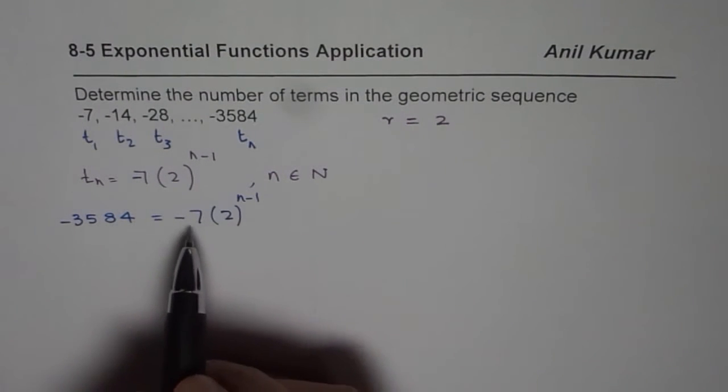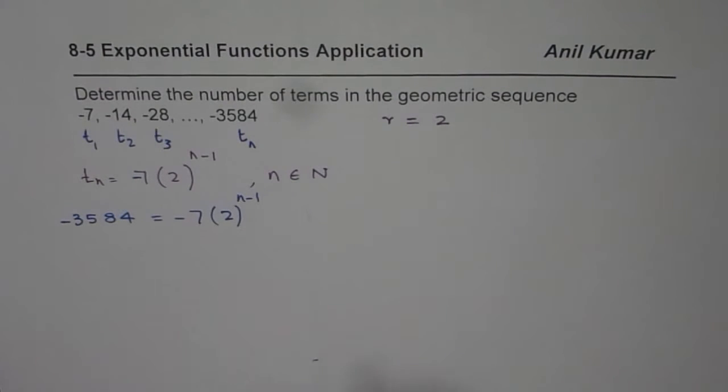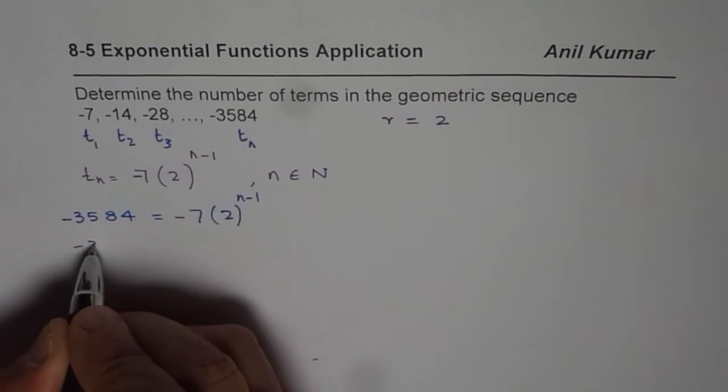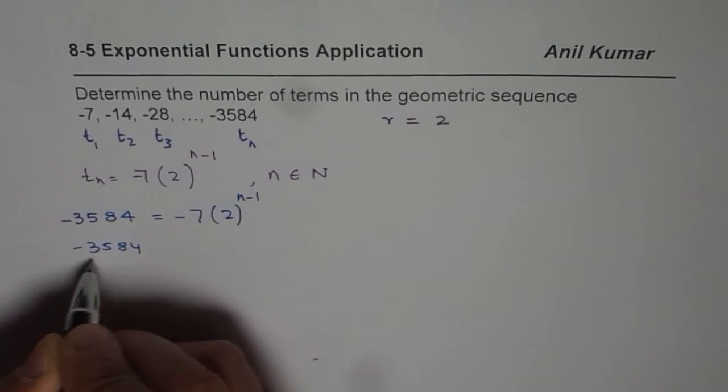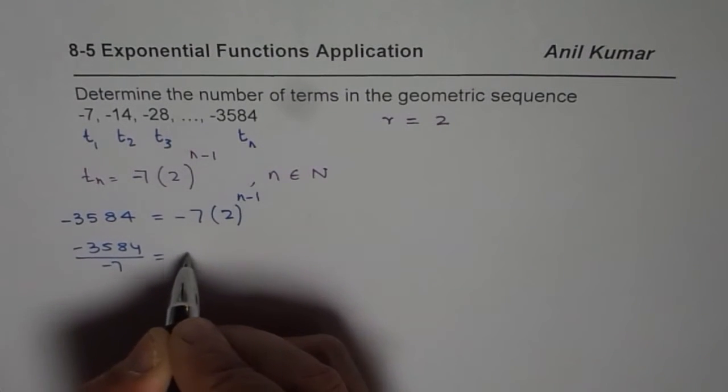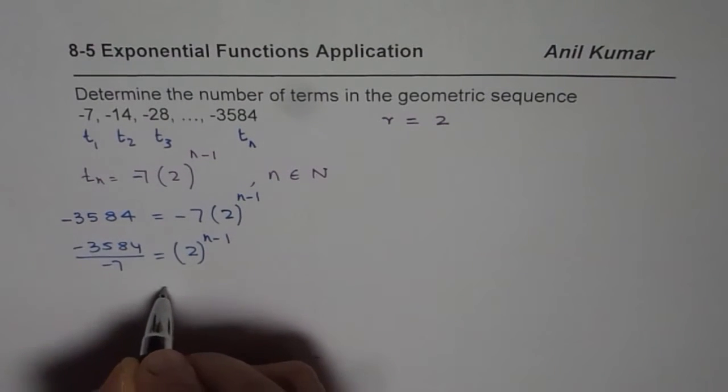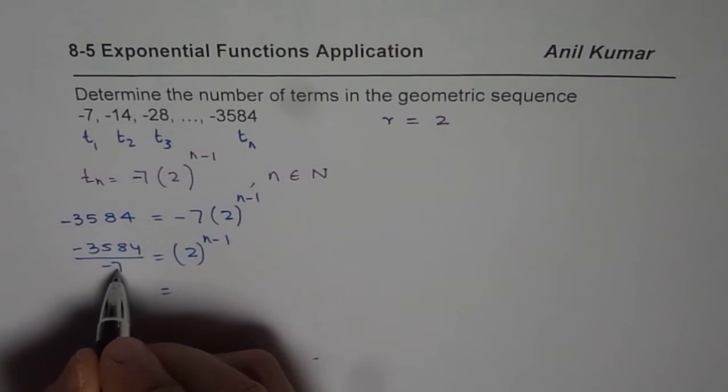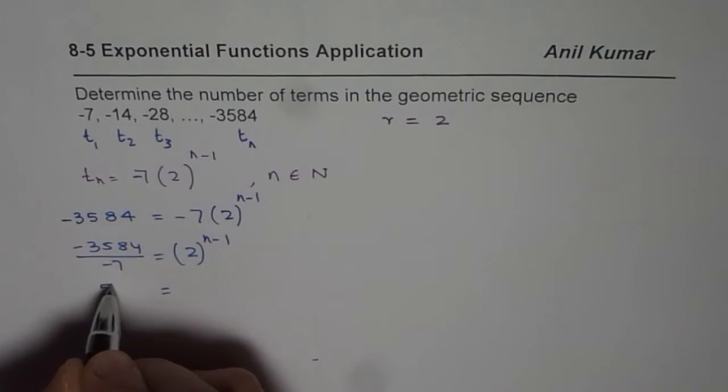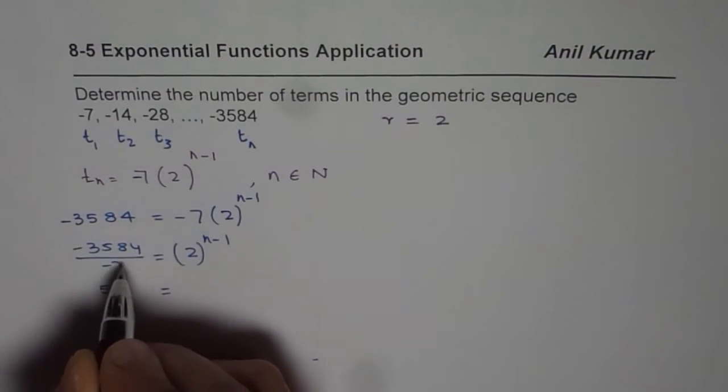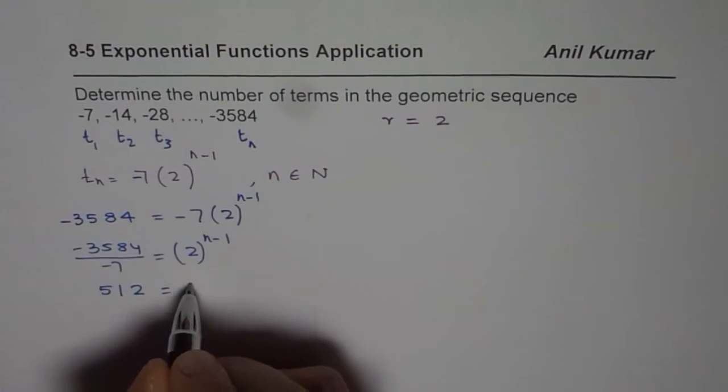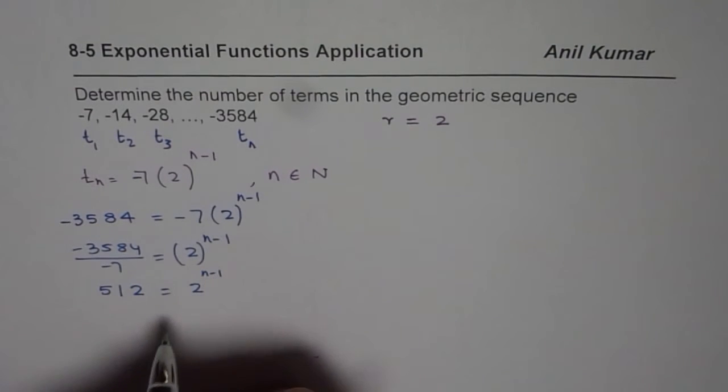Now in this case, we can divide both sides by minus 7. So we get minus 3584 divided by minus 7 equals 2 to the power of n minus 1. So when you divide, minus minus cancel, and we get 512 equals 2 to the power of n minus 1.